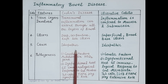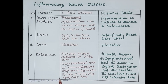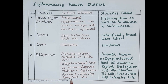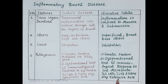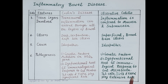In Crohn's disease, T helper 1 cells and tumor necrosis factor (TNF), a pro-inflammatory mediator, play a significant role in causing chronic inflammation and ulceration. In ulcerative colitis, T helper 2 cells, the pro-inflammatory cytokine interleukin-13, and tumor necrosis factor alpha play an extensive role in perpetuating inflammation and causing ulceration.